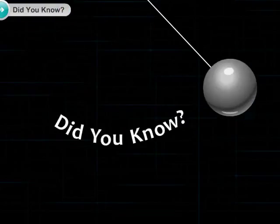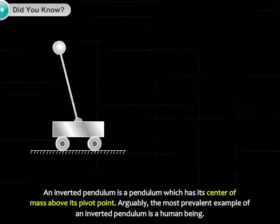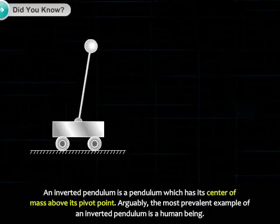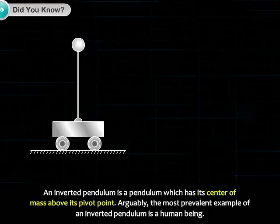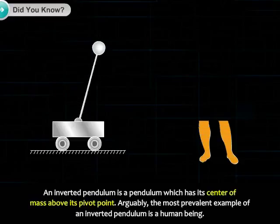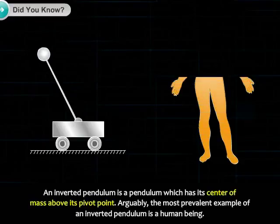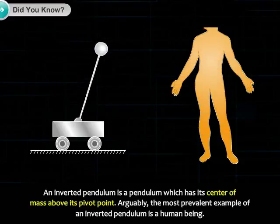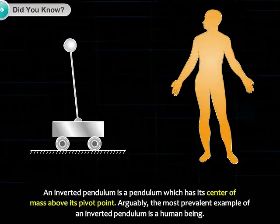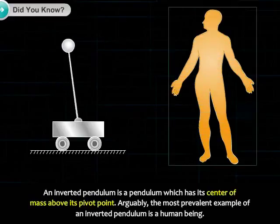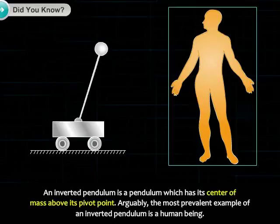Did you know? An inverted pendulum is a pendulum which has its center of mass above its pivot point. Arguably, the most prevalent example of an inverted pendulum is a human being.